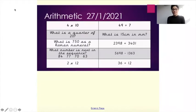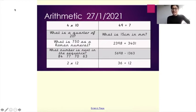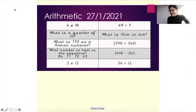2 times 12. 49 divided by 7. What is 15 centimetres in millimetres? 2,398 plus 3,401. 5,698 take away 1,363. 36 divided by 12. Go ahead and try these questions and we will go through the answers in the next slide.